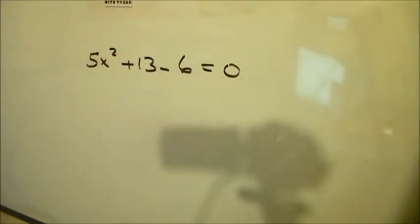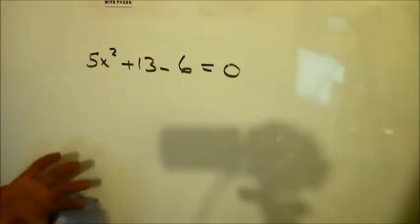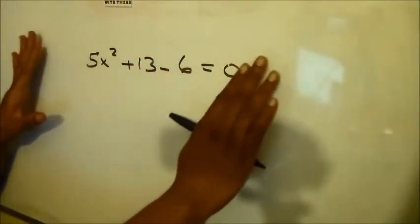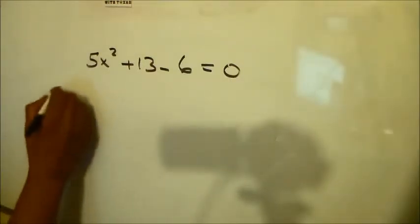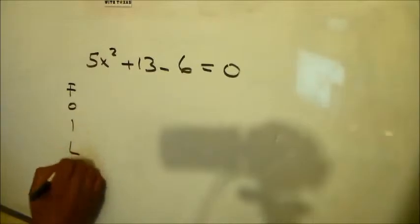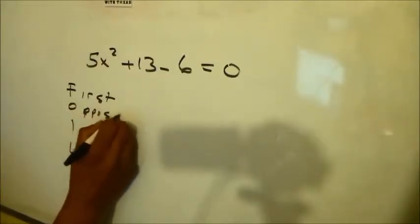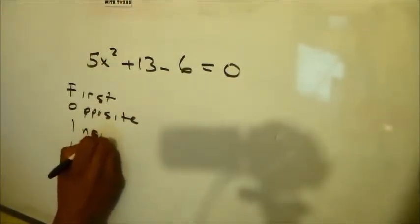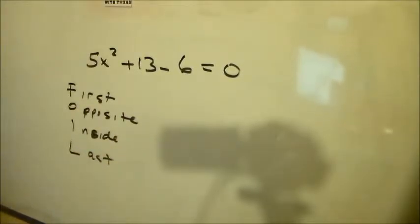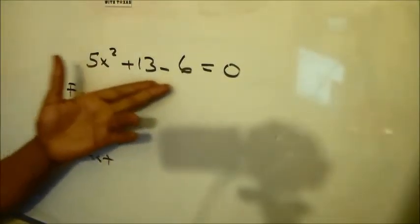Solve by factoring: 5x squared plus 13x minus 6 equals 0. First of all, what we have to do is understand the concept of FOILing. FOILing is what results in this. Just to give you an example, when I say FOIL, I mean F-O-I-L. We say First, Opposite, Inside, and Last. What that means is we have FOILed to get this problem.